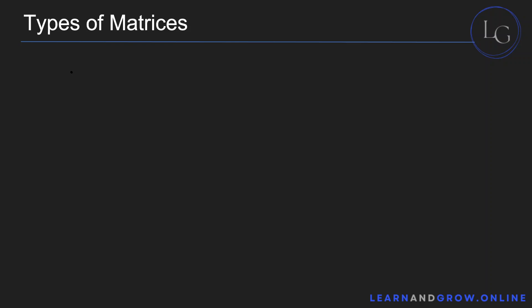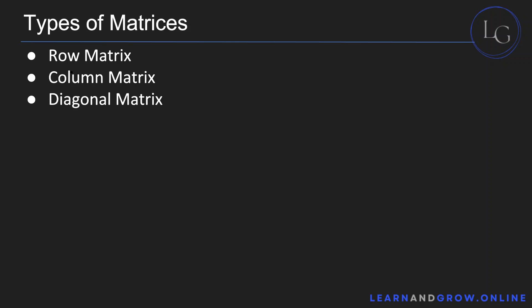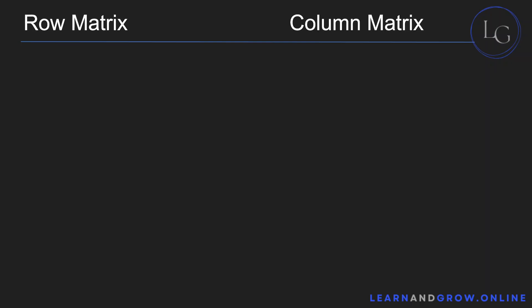Types of matrices: we'll be discussing row matrices, column matrices, diagonal matrices, scalar matrices, and identity matrices. So what are row matrices and column matrices?